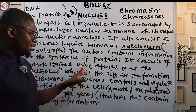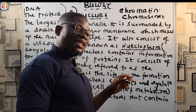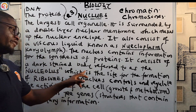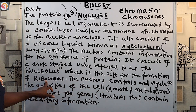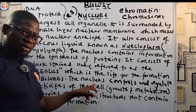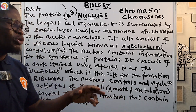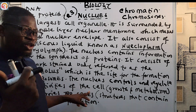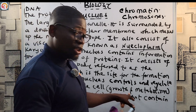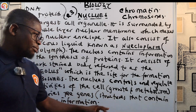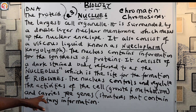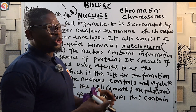The nucleus consists of a dark-stained body referred to as the nucleolus, which is the site for the formation of ribosomes. The function of the nucleus is to control and regulate the activities of the cell — for example, growth and metabolism. It also carries the genes, which are structures that carry hereditary information.